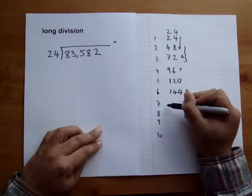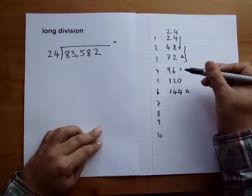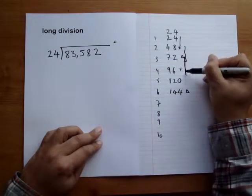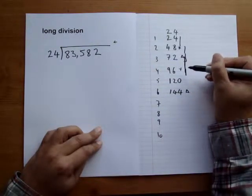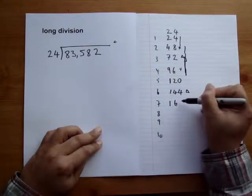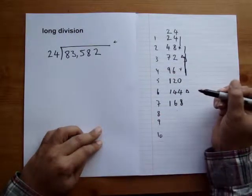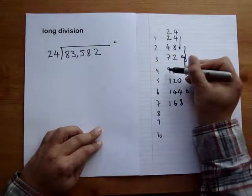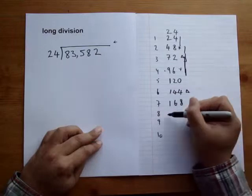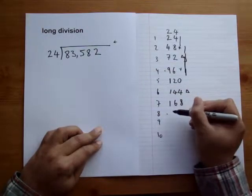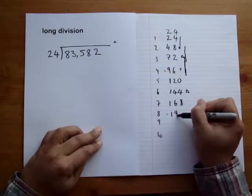Seven times 24, add the answers that we got for the 4 and the 3, and we get 168. Eight times 24, double the answer that we got for the 96 and we get 192.